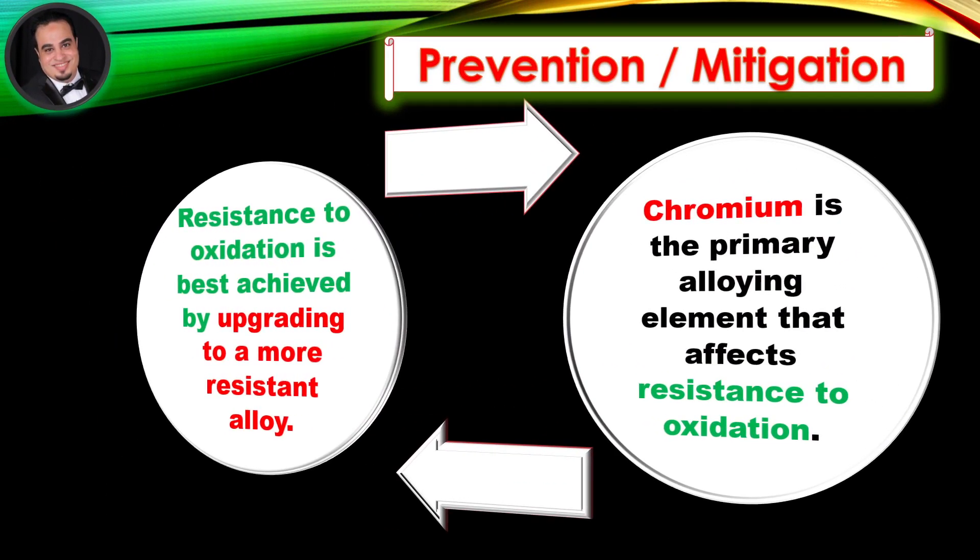Prevention and mitigation. Resistance to oxidation is best achieved by upgrading to a more resistant alloy. Chromium is the primary alloying element that affects resistance to oxidation.